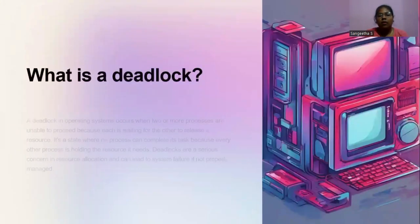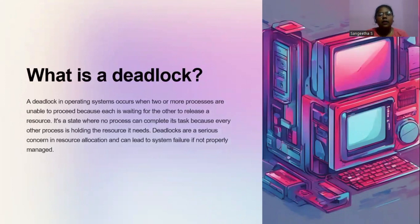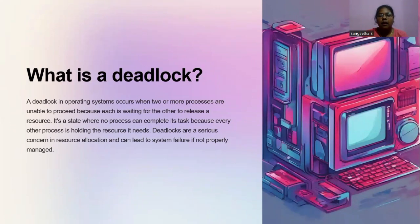What is a deadlock? A deadlock in an operating system occurs when two or more processes are unable to proceed because each is waiting for the other to release a resource. It is a state where no process can complete its task because every other process is holding the resources. Deadlocks are a serious concern in resource allocation and can lead to system failure if not properly managed.